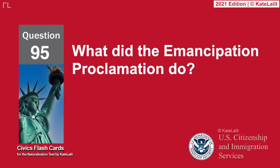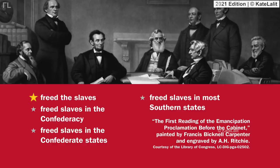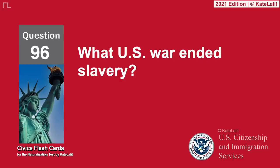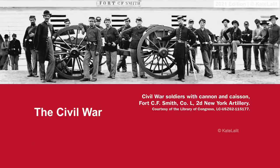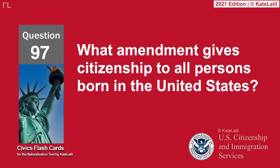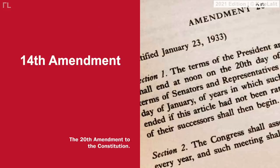What did the Emancipation Proclamation do? Freed the slaves. Freed slaves in the Confederacy — freed slaves in the Confederate States — freed slaves in most southern states. What U.S. war ended slavery? The Civil War. What amendment gives citizenship to all persons born in the United States? The Fourteenth Amendment.